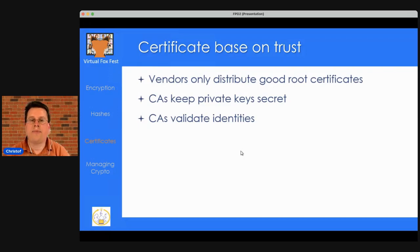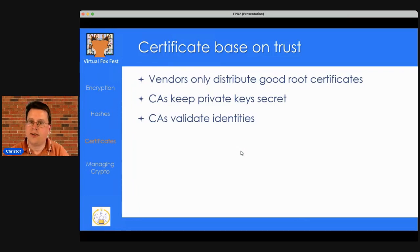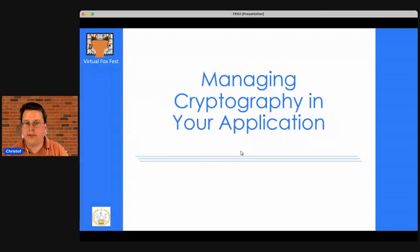Surprisingly, the entire certificate system is based on trust — even in a world where countries don't always trust each other. We trust OS and browser vendors to distribute only good root certificates, we trust certificate authorities to keep their private keys secret, and we trust CAs to properly validate identities. Without root certificates for the other party, encrypted communication is impossible — so root certificates are international, forming a worldwide trust system.